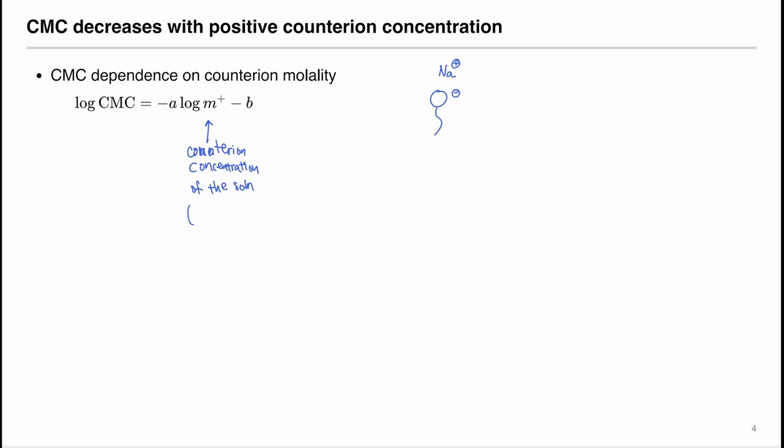And this includes counterions originally that comes with the surfactant. Each surfactant should have a corresponding counterion Na+. And you might also, you could also add other counterions that are extras such that you can add NaCl into it. So there is extra counterion.